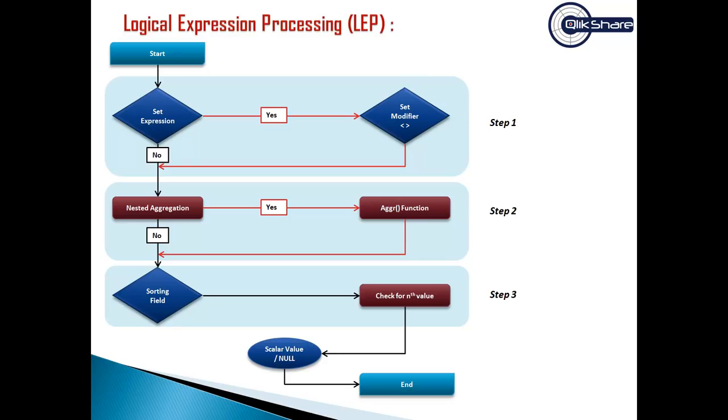If we have more than one value returning, it will return null. That's the end of the process. I hope this kind of makes sense and gives you better understanding of how you should be thinking about FirstSortedValue. If you find it confusing, you can always skip it and look for the next slide.